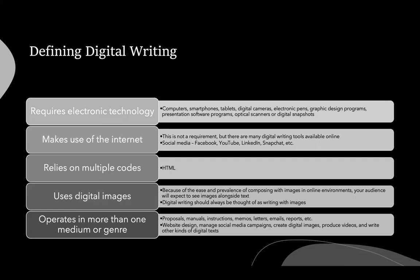Digital writing can also rely on multiple codes like HTML, though we're not really going to cover that in the scope of this course. Digital images are also a key element of digital writing. Because of the ease and prevalence of composing with images in online environments, your audience is expecting to see an image alongside text. Digital writing should always be thought of as writing with images.